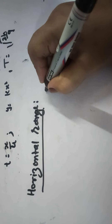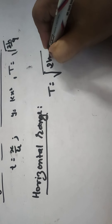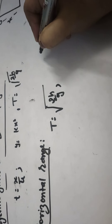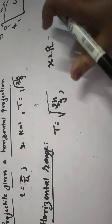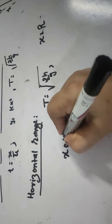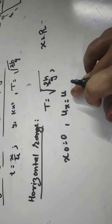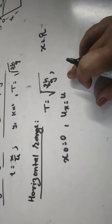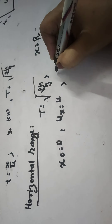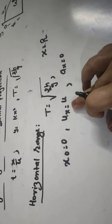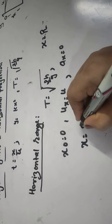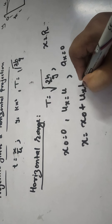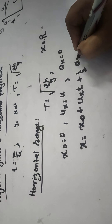In this case, T = √(2H/G). X, the horizontal distance, equals capital R (the range). X₀ = 0, UX = U which is the horizontal velocity for horizontal projection, and AX = 0 since horizontal velocity is constant, so acceleration along it is zero. Using the equation X = X₀ + UX·T + ½·AX·T².